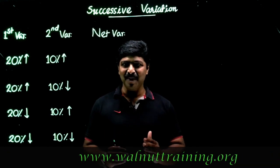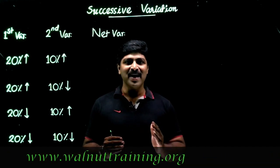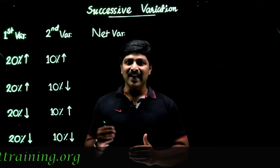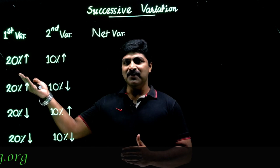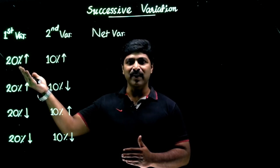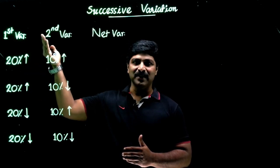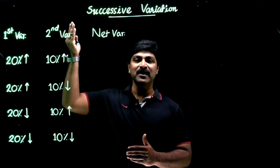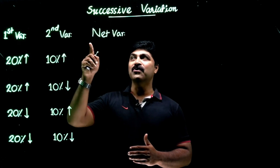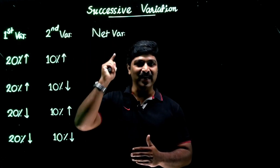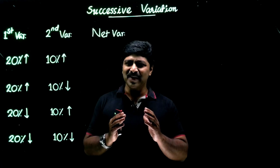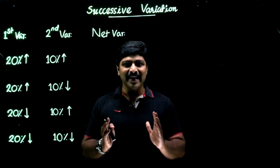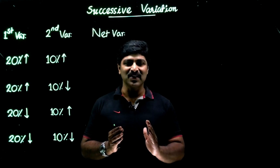First of all, you have to be familiar with the concept of what is a successive variation. Consider a simple example here: suppose a quantity first increased by 20%, then successively increased by another 10%. We have to find what is the net variation here. That's a very simple example for getting a clear idea about the concept of successive variation.